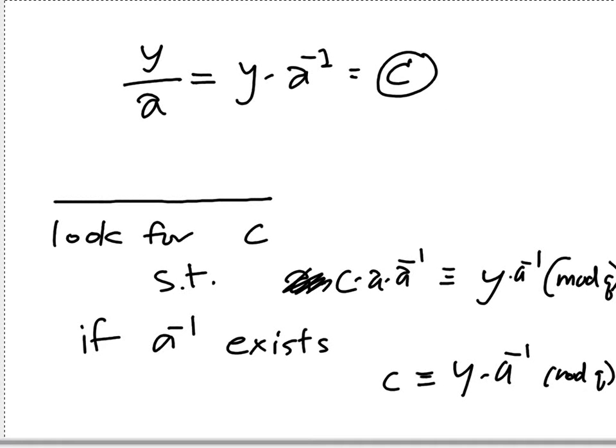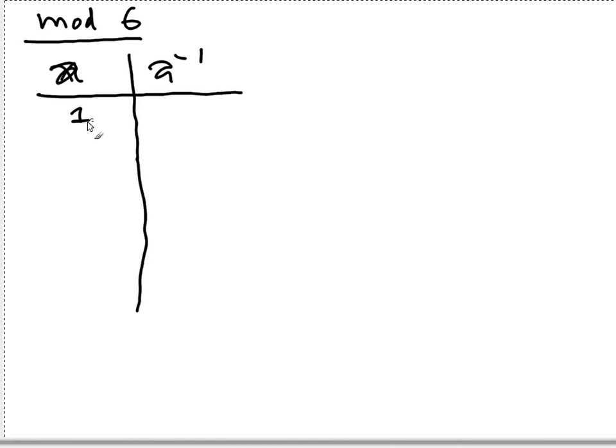So let's actually do some example for that. Let's say we do everything mod 6 first. Let's try to find out the multiplicative inverse of every number mod 6. So if we have a and the inverse of a, a can be 1, 2, 3, 4, 5 because we do that mod 6.